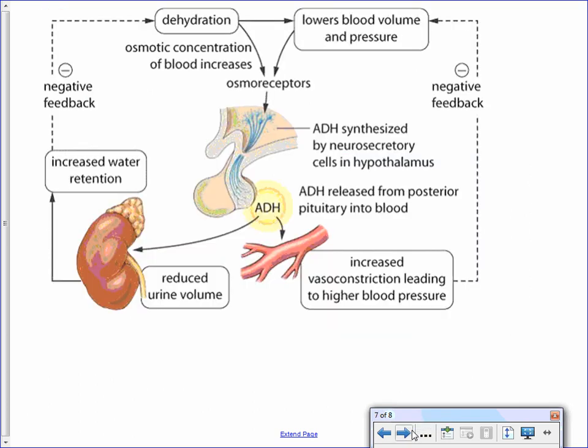Similar to the aldosterone feedback loop, here is the feedback loop for antidiuretic hormone. Starting with the stimulus: the simplest one is dehydration — you don't have enough water in your body, so you want to hold on to whatever water you have. There are specific receptors in the hypothalamus called osmoreceptors that measure the concentration of water and salt in your body. As water concentration goes down, salt concentration increases, raising osmotic pressure and stimulating these osmoreceptors. A drop in blood volume or blood pressure — such as from significant blood loss — is also a stimulus for these osmoreceptors.